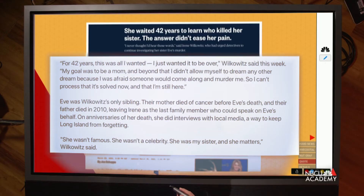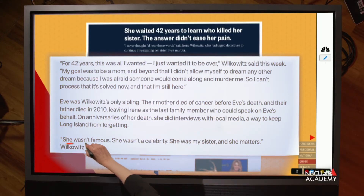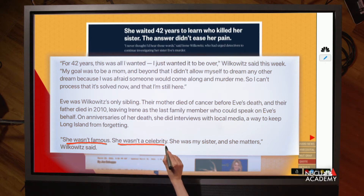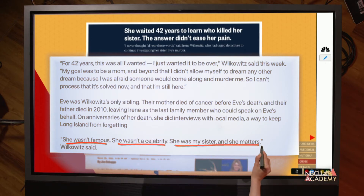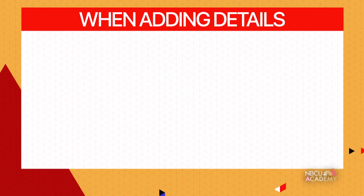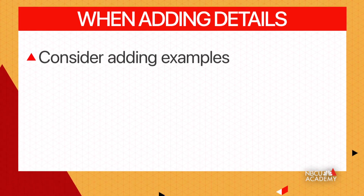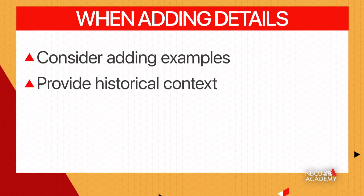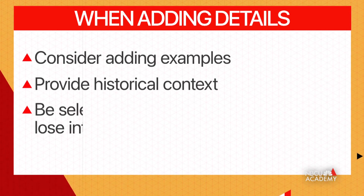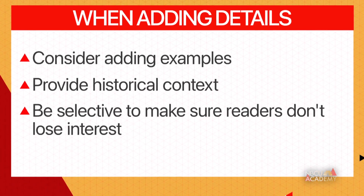Save the quotes for moments that are emotional and impactful. A good quote does more than just convey information — it conveys emotion, it conveys detail, it helps you understand a person and understand the story. Next you want to add more details that expand on the points you made in the nut graph. There could be examples, there could be historical context, but you don't want to add too much detail because the reader could lose interest, so be selective about what you include.